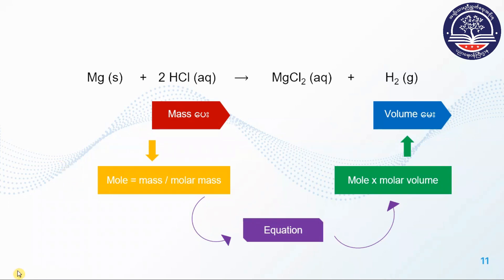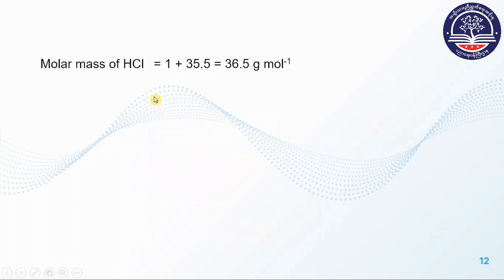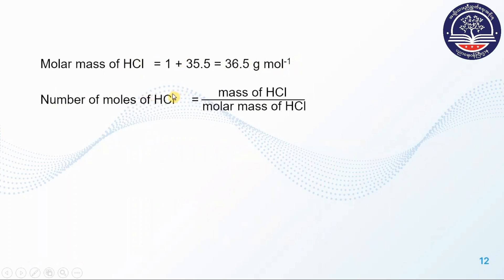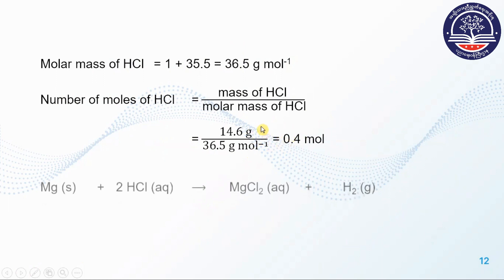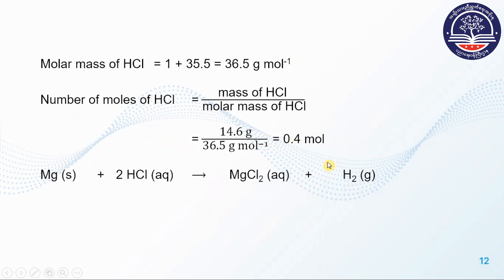Molar mass of HCl: hydrogen is 1, chlorine is 35.5, so molar mass of HCl is 36.5 grams per mole. The mass of HCl is 14.6 grams, and molar mass is 36.5 grams. The mass calculation gives 1,000 grams of HCl for the equation.